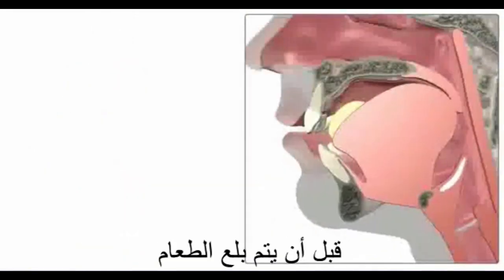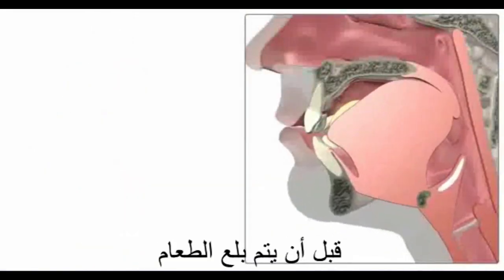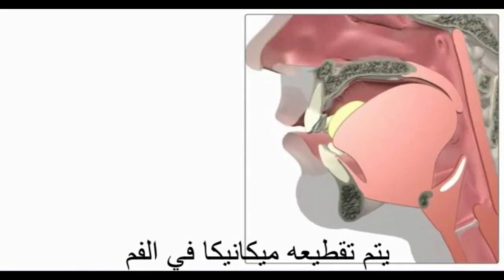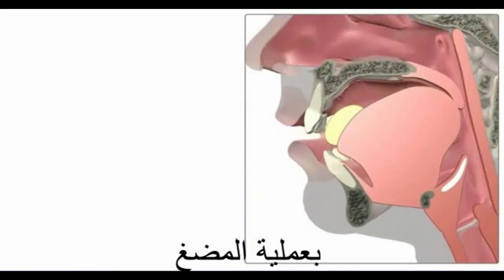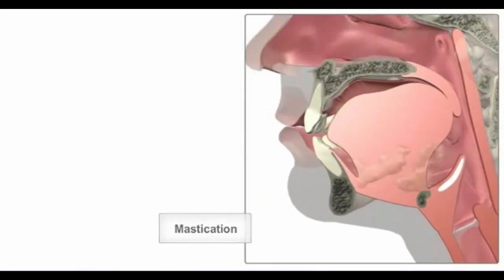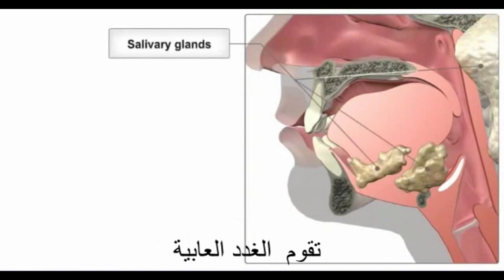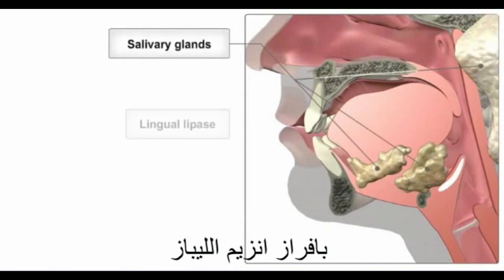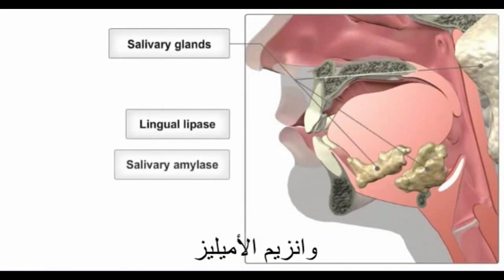Before food is swallowed, it is mechanically broken down in the mouth by chewing or mastication. The salivary glands secrete the enzymes lingual lipase and salivary amylase.